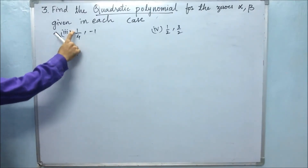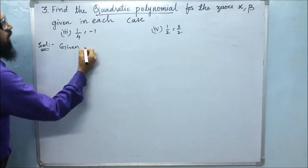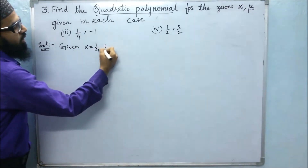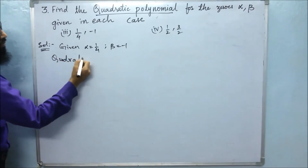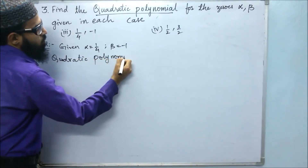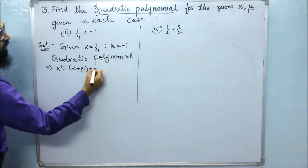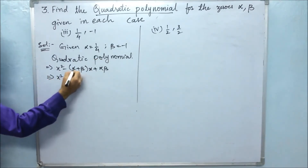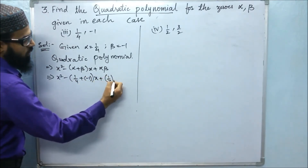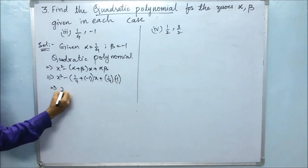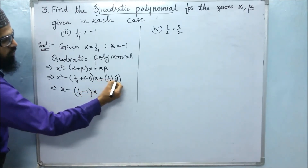In the third bit, they gave the roots 1 by 4 comma minus 1. In the solution, first I will write what is given. Given: alpha is 1 by 4 and beta is minus 1. For the quadratic polynomial, the formula is x squared minus (alpha plus beta) into x plus alpha beta. So: x squared minus (1 by 4 plus minus 1) x plus (1 by 4 into minus 1).